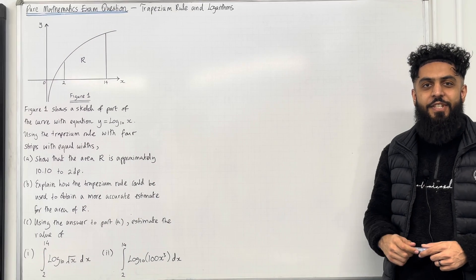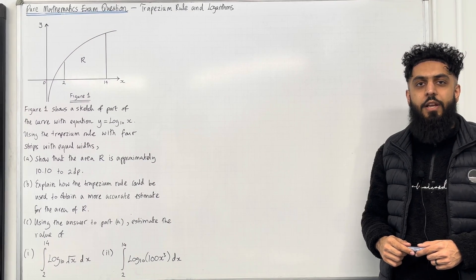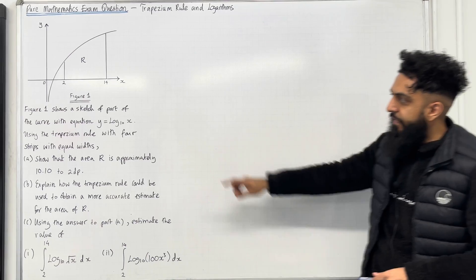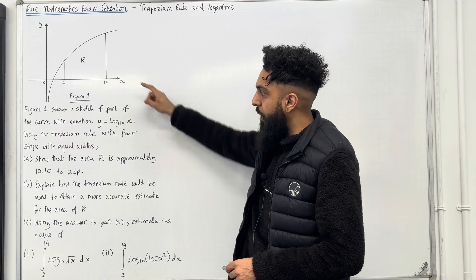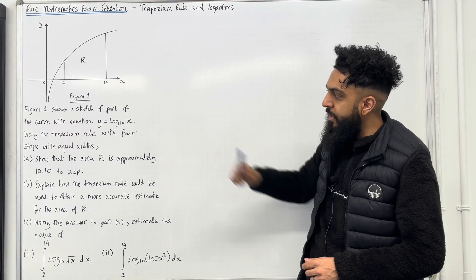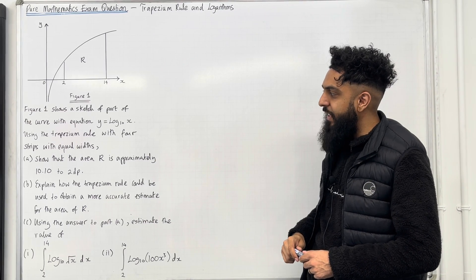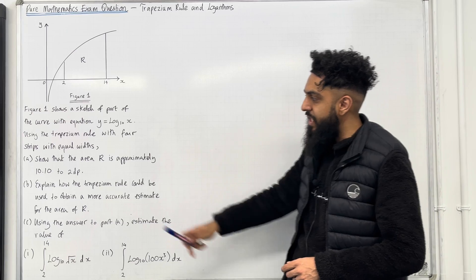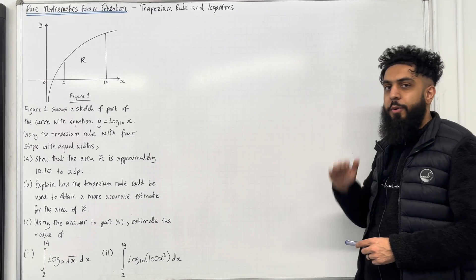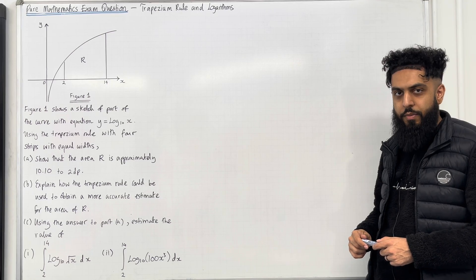Welcome back. In this YouTube video, I'm looking at pure mathematics exam question on the trapezium rule and logarithms. Here is the exam question. Figure 1 shows a sketch of part of the curve with equation y = log base 10 of x. Using the trapezium rule with 4 strips of equal widths, part A shows that the area R is approximately 10.10 to 2 decimal places. Please pause the video and have a go at part A, then play the video.